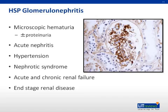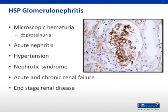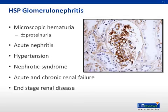Renal disease is mediated by the deposition of IgA in the glomeruli. Most patients who develop renal disease will do so within three months after symptom onset, and it rarely occurs before the rash. Patients suspected of having more severe renal involvement may require biopsy, as the severity of the lesion may guide treatment and is the primary determinant of prognosis.